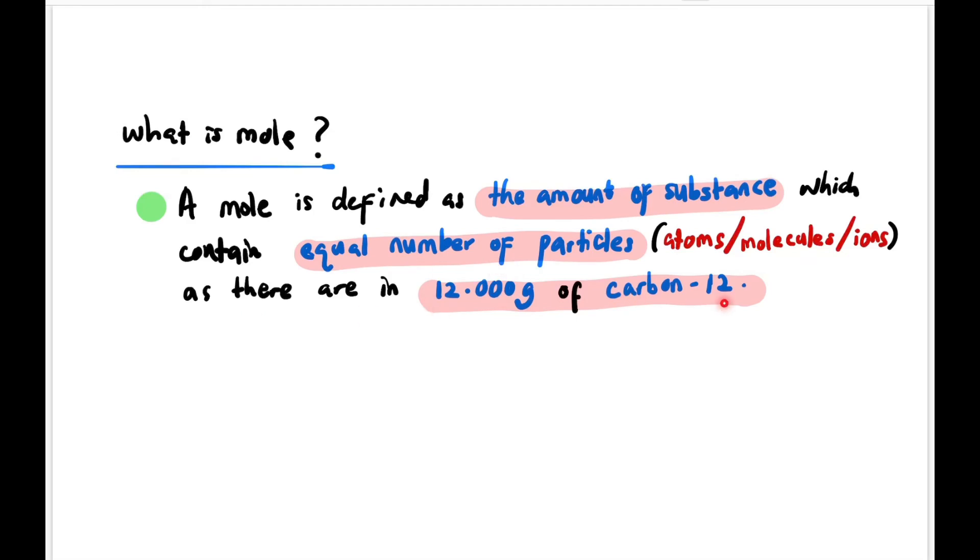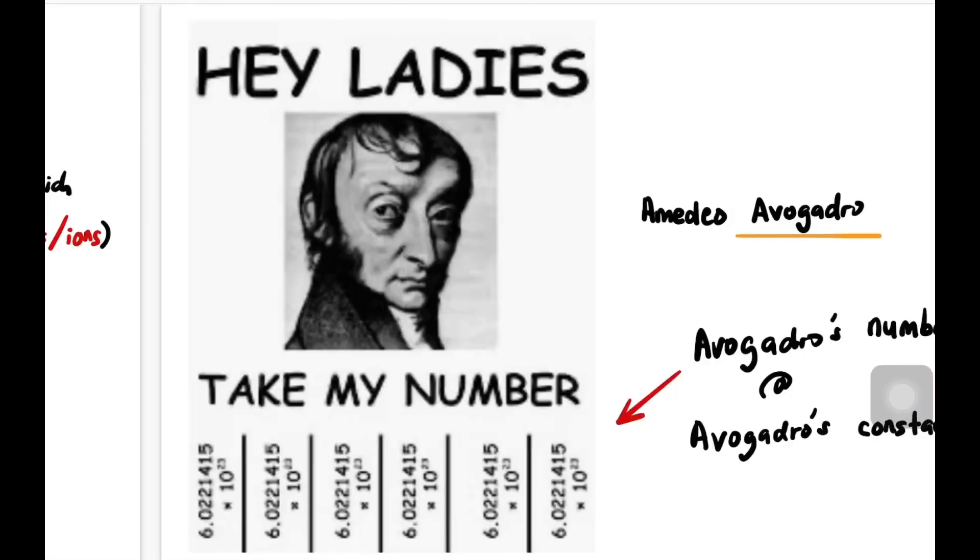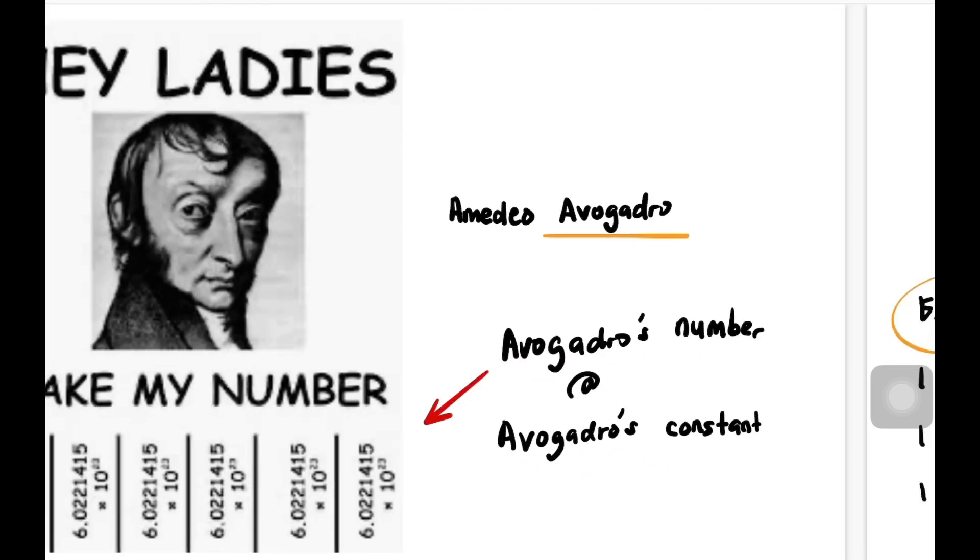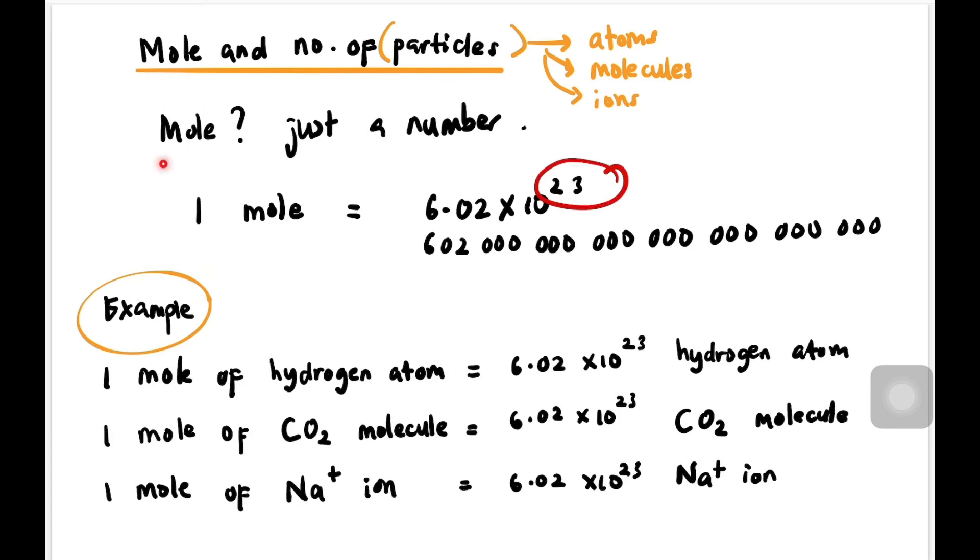So, ada satu orang saintis namanya Amedeo Avogadro. He introduced a number called Avogadro's number, which is to represent the amount of one mole. If we look at mole, it's actually a number—a bilangan. So one mole is equivalent to 6.02 × 10²³. If we write out the zeros, it's 602,000,000,000,000,000,000,000.